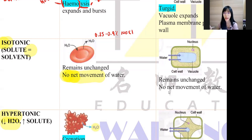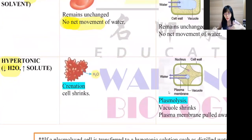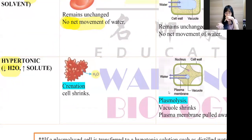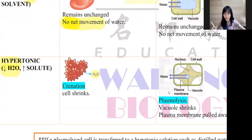If it's hypertonic, hyper means lesser water and more solute. I have a red blood cell and 30% sucrose solution — sugar solution. The sucrose solution has lesser water and the red blood cell has more water, so water diffuses out from the red blood cell into the lesser water. The red blood cell is going to shrink, become smaller in size. We call this crenation — crenate means shrinks.